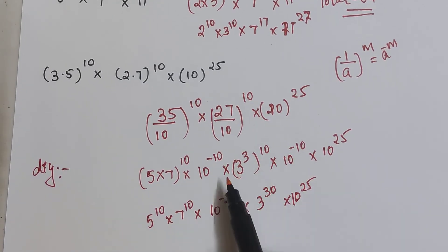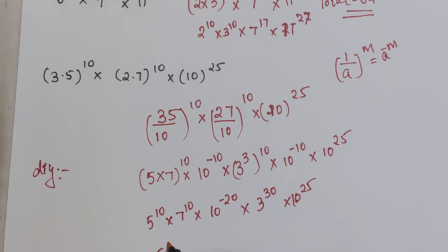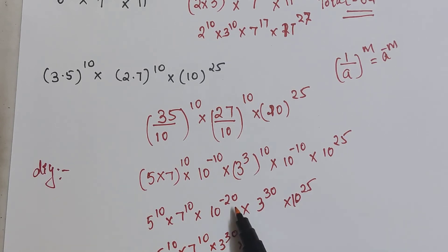Why have I added the indices? Because when the bases are same and we are doing a product of the bases, then the indices can be directly added. So now this comes out to be 5 raised to 10 into 7 raised to 10 into 3 raised to 30 into 10 raised to 25 minus 20. So that becomes 10 raised to 5.